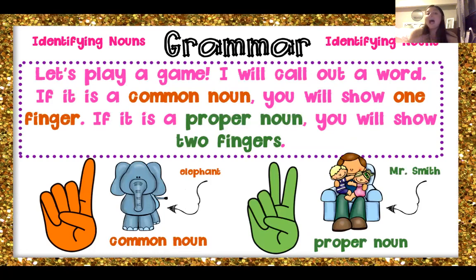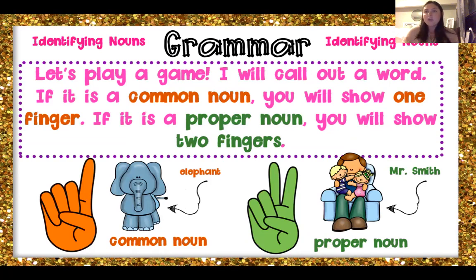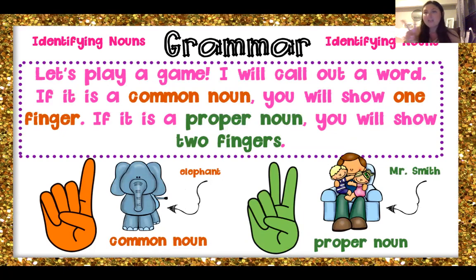So we're going to play a game. I'm going to call out a word — if it's a common noun, you're going to show me one finger; if it's a proper noun, you're going to show me two fingers. So if I just say teacher, you give me a one — common noun, we don't know who I'm talking about. But if I say Miss Catrone, that's a two — I'm a proper noun, the specific teacher.